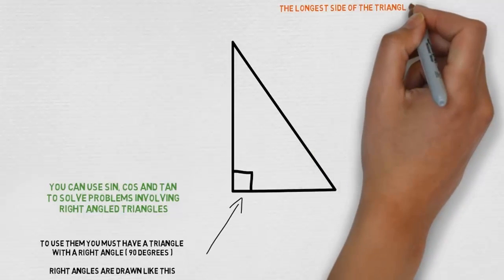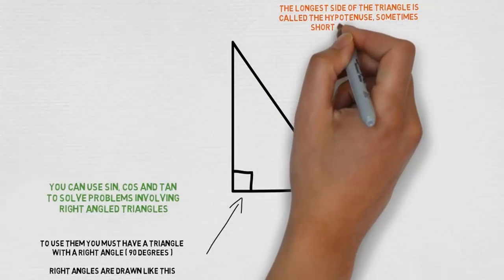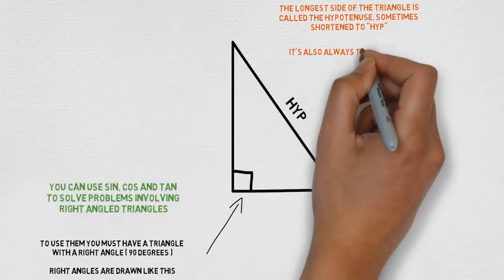The longest side of the triangle is called the hypotenuse, sometimes shortened to HYP. It's also always the side of the triangle opposite the right angle.